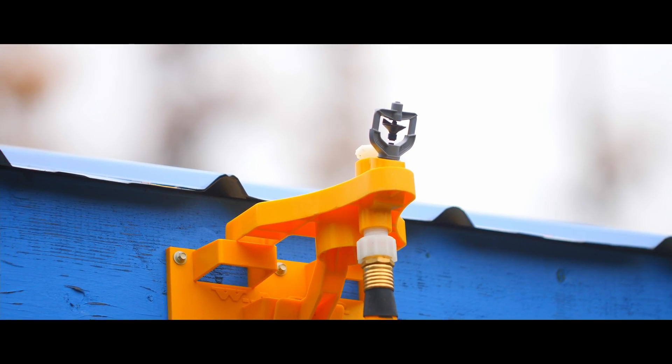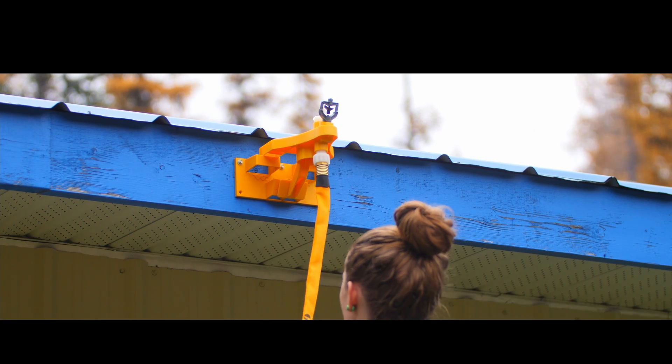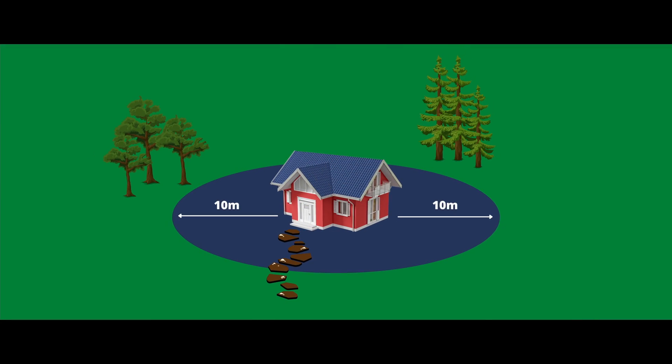These sprinkler heads conserve water and are able to work at very low pressure. They can cover a radius of up to 10 meters.